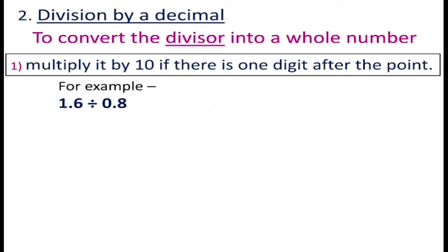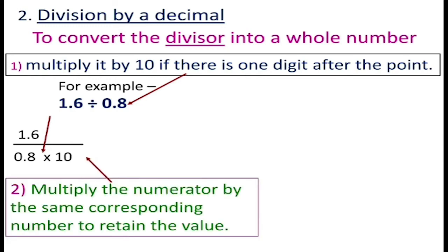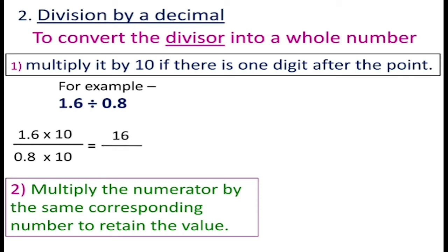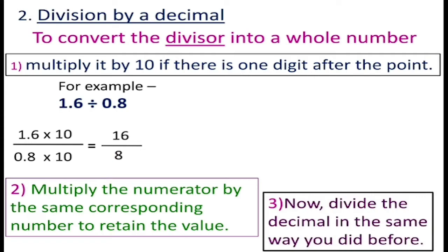Here I have taken an example where 1.6 is divided by 0.8. The divisor is 0.8, and in 0.8 there is one digit after the decimal point, so the divisor will be multiplied by 10. We also multiply the numerator by the same number to retain the value. So multiply 1.6 by 10 as well. When 1.6 is multiplied by 10 you get 16, and when 0.8 is multiplied by 10 you get 8.